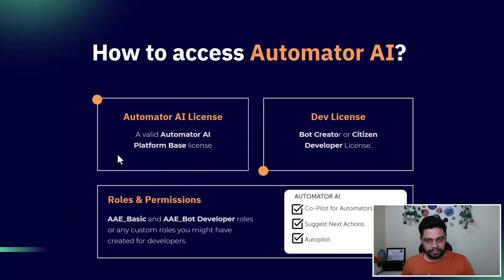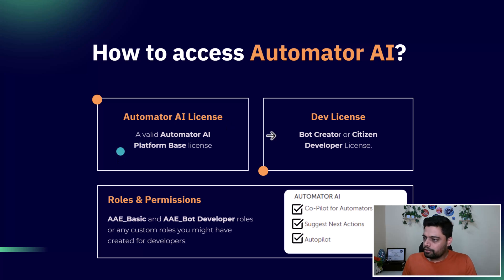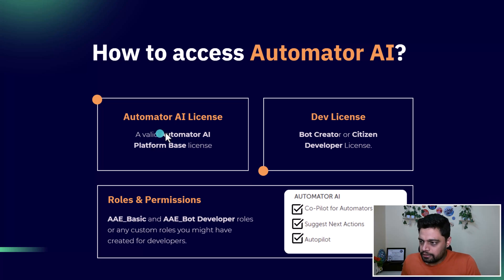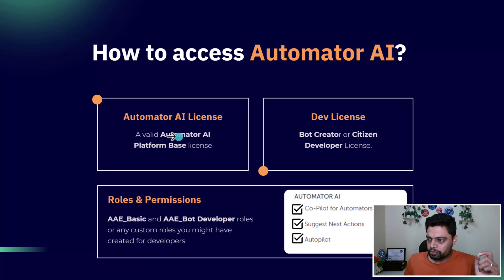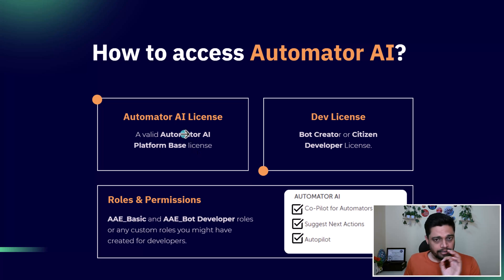The question is: how do you access Automator AI? There are three things. First, you need an Automator AI license. Then you need a developer license. Then you need roles and permissions. For the Automator AI license, you need a valid Automator AI platform-based license. Even if you don't have an enterprise license, that's fine — you should have the Automator AI platform-based license. If you have that license, these features are enabled for you.